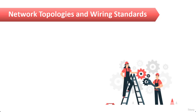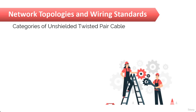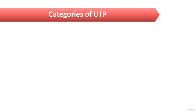In the last lecture we saw the Ethernet cable descriptions, and in this lecture we will see the categories of unshielded twisted pair cable, that is the UTP. UTP cable is rated in the following categories, so make sure you have all your eyes and ears wide open and focus on the categories of UTP cable.